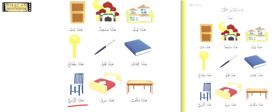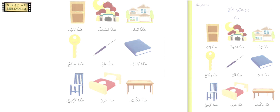You also have to memorize this vocabulary. Bait — house; masjid — mosque; baab — door; kitab — book; qalam — pen; miftah — key; maktab — desk; sarir — bed; kursi — chair. All of these things are in your room — most of them at least. Masjid is not in a room, but most are in your house. Now let's go to the next page.